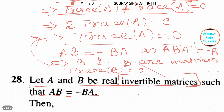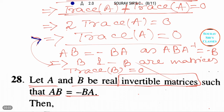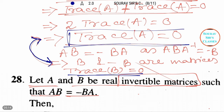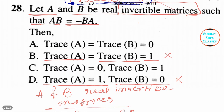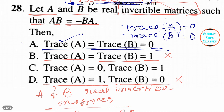Let me change the color for clarity. Using the same argument as for trace(A), trace(B) is also equals to zero. So we have trace(A) equals zero and trace(B) equals zero. Therefore, the correct answer is option A, which says trace(A) equals trace(B) equals zero.